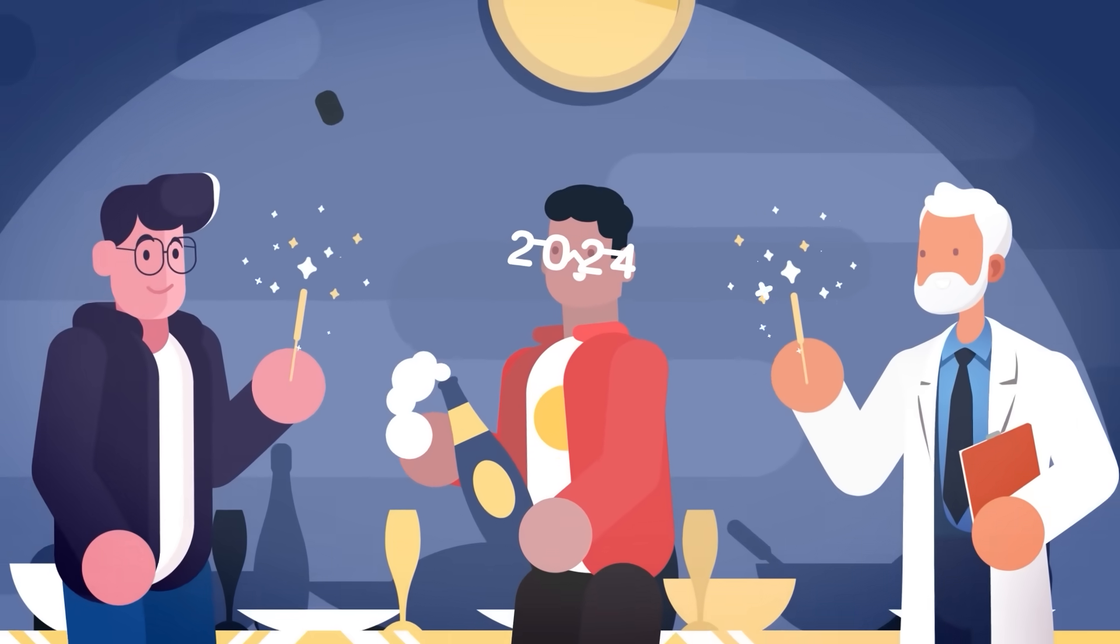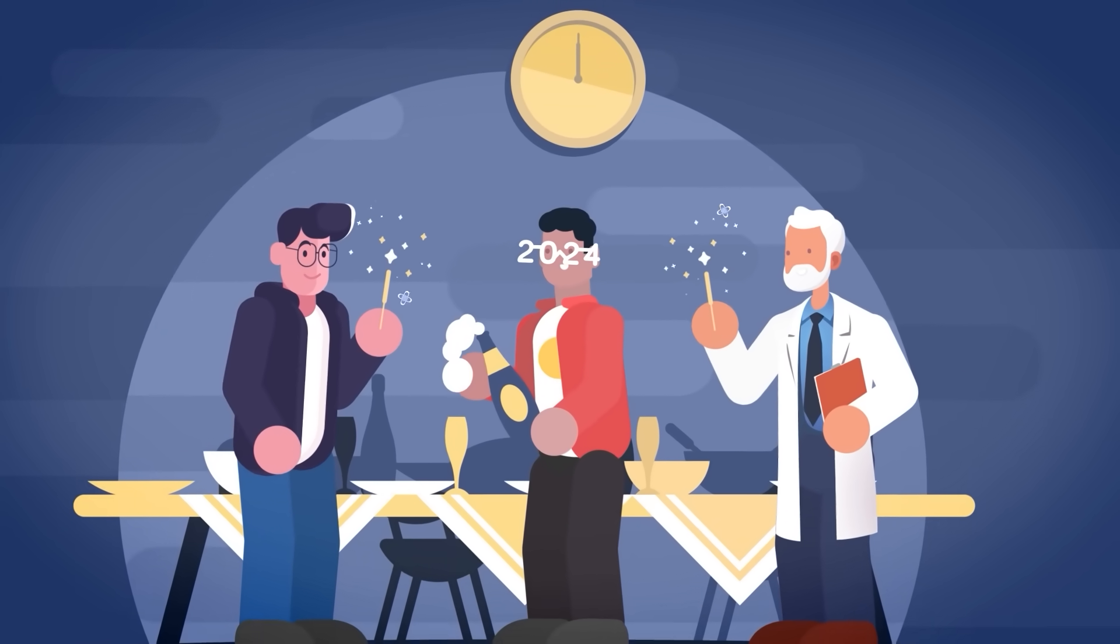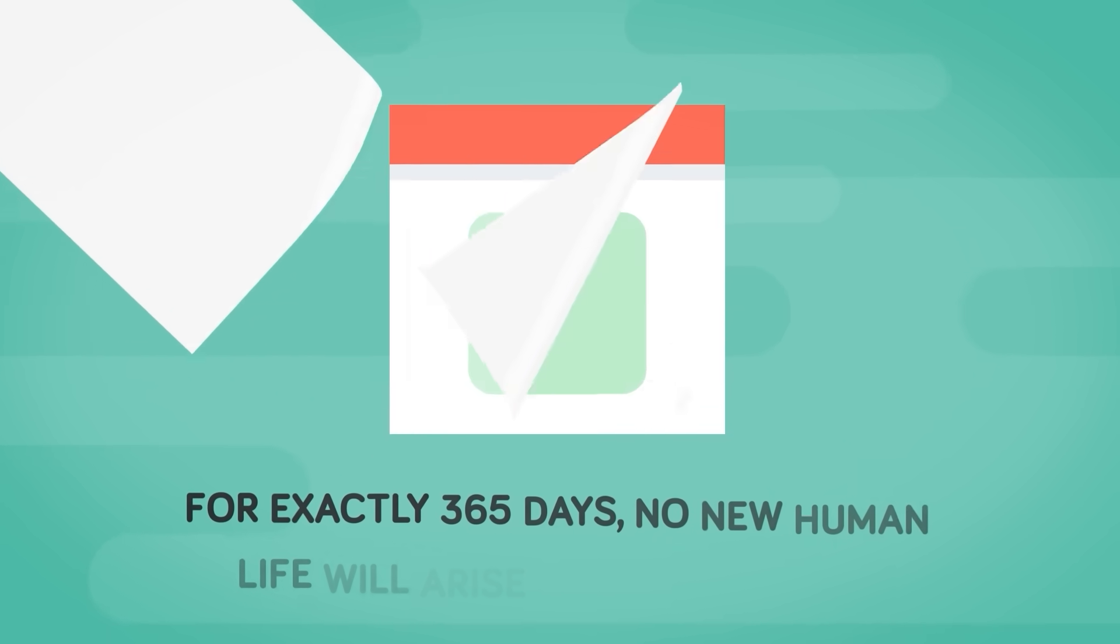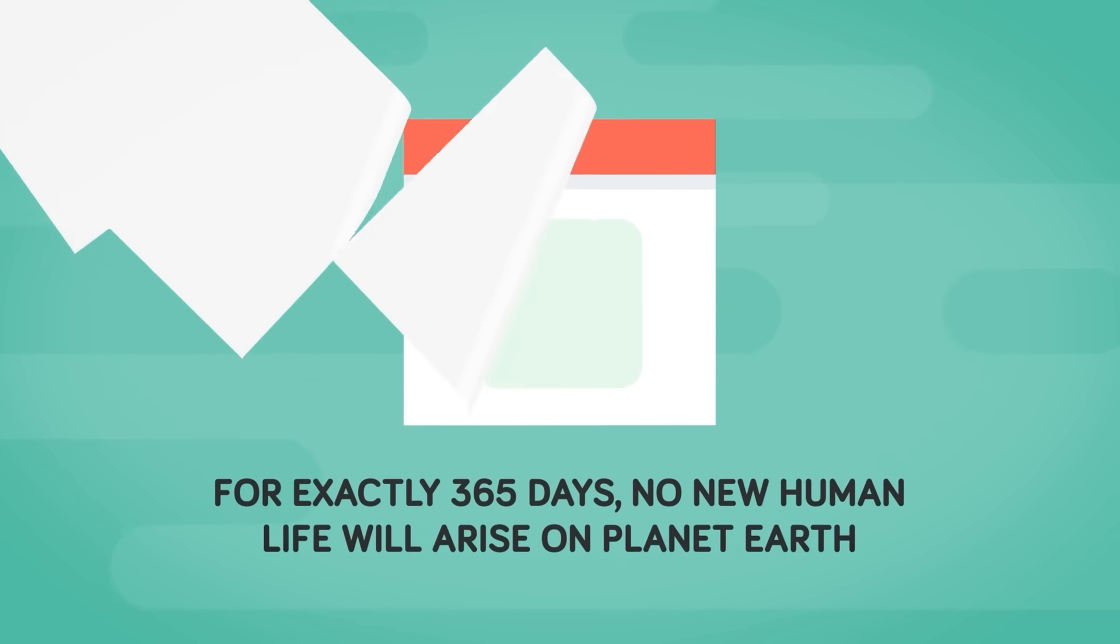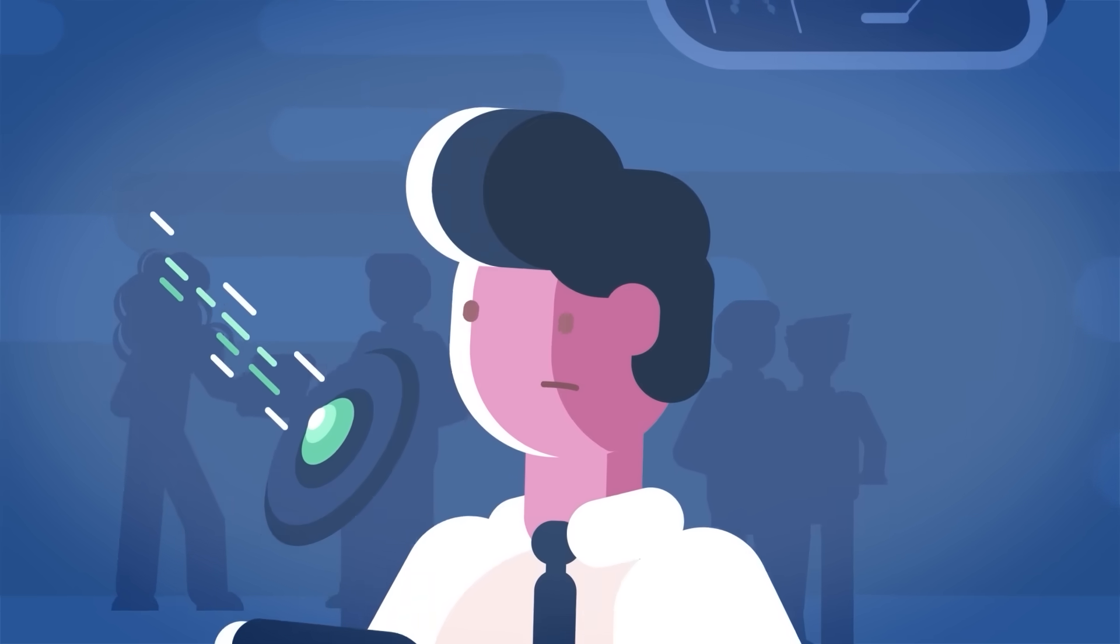From January 1, 2024 midnight to December 31, 2024, 11:59 PM, there will be no babies born. This means for exactly 365 days, no new human life will arise on planet Earth. Scientists and doctors knew something was wrong long before this moment in time, however.